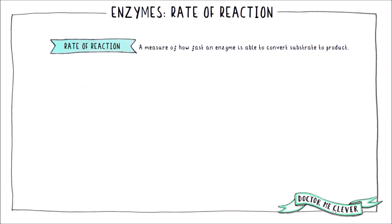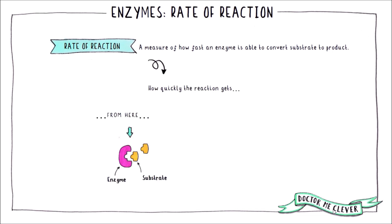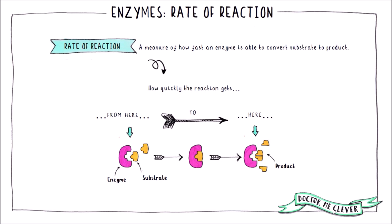The rate of an enzyme catalyzed reaction is a measure of how fast an enzyme can convert its substrate into product — how quickly the reaction gets from the start, where there's just enzyme and substrate, to the end, where there's just enzyme and product. How quickly an enzyme converts a substrate into a product depends on the environment the enzyme finds itself in. If the enzyme is in optimum conditions it will work well, but in suboptimal conditions the rate of reaction will decrease.